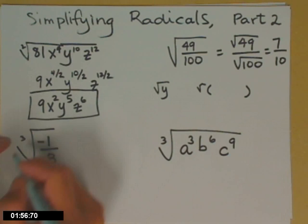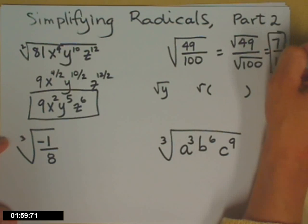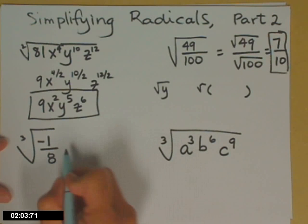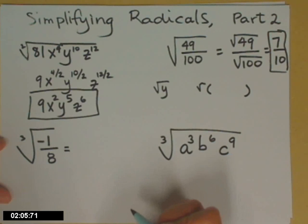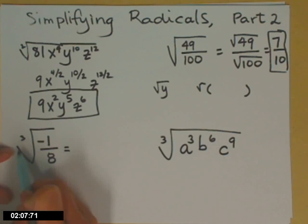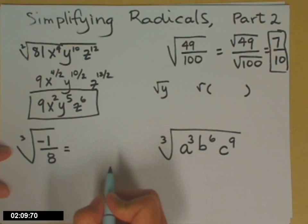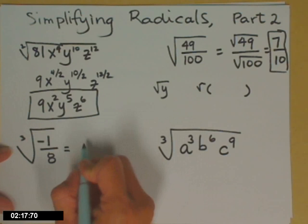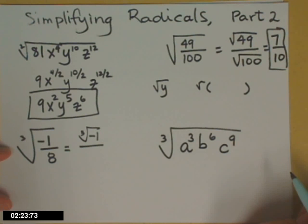So two more examples down here at the bottom. I'll go ahead and circle that answer up at the top, 7 tenths. I have the cubed root of negative one-eighth. So I've said before that you can take odd, three, odd roots of negative numbers. So in this case, I need to think of something that if I multiply it three times by itself, I will get to negative one-eighth. Keeping in mind what I had just said about that 49 one-hundredths, let's go ahead and break this up into a top radical and a bottom radical.